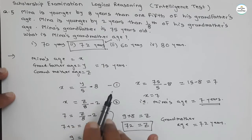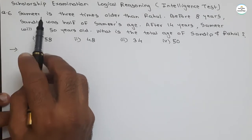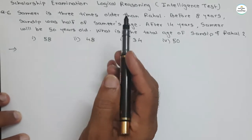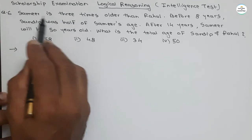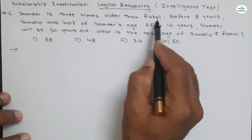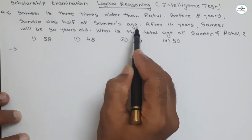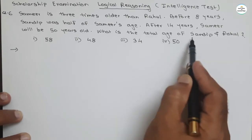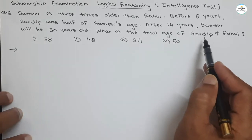Now similarly, see the second question of this video. You will find a number of questions in this series of videos, and in this series logical reasoning is covered. The question is: Samir is three times older than Rahul. Before eight years, Sandeep was half of Samir's age. And after 14 years, Samir will be 50 years old. What is the total age of Sandeep and Rahul?